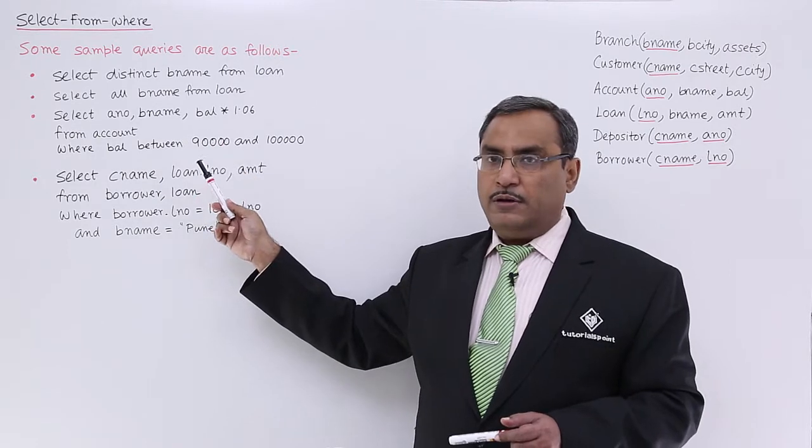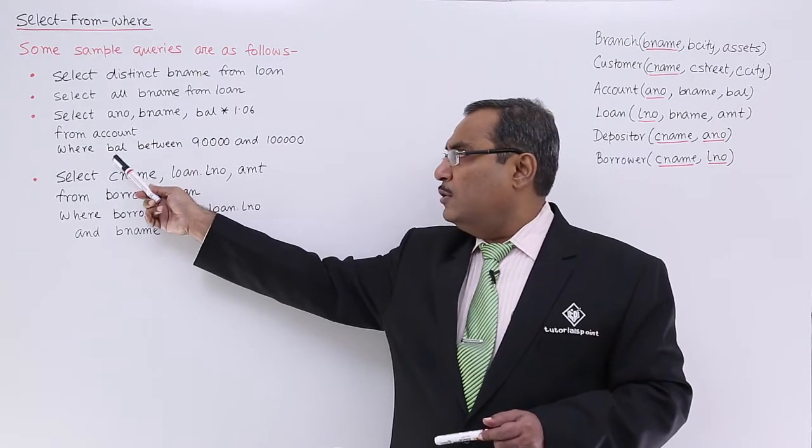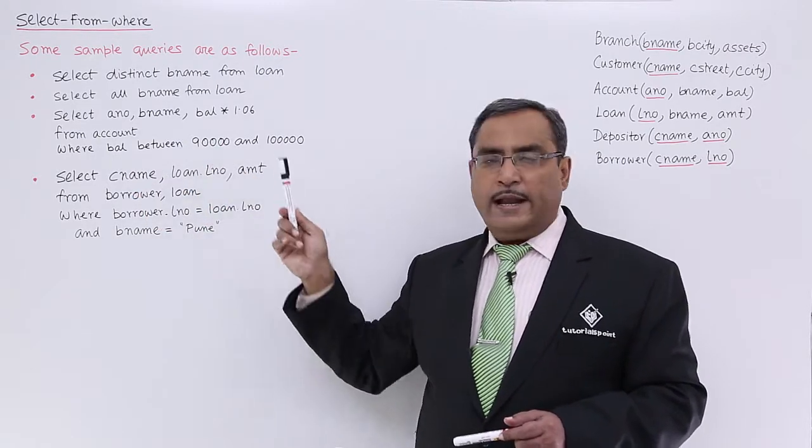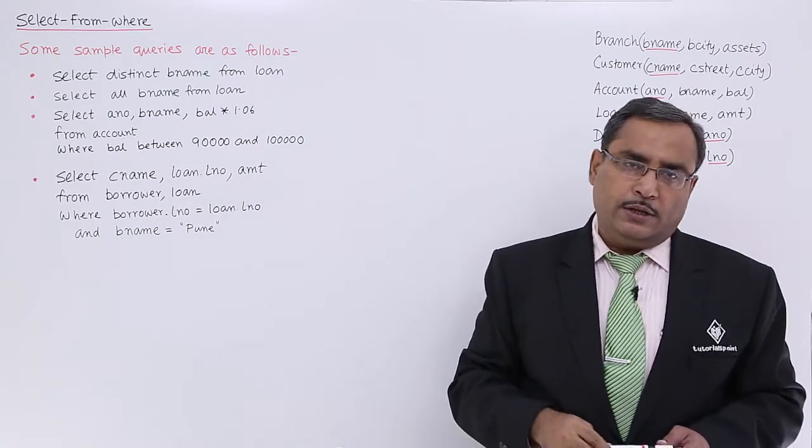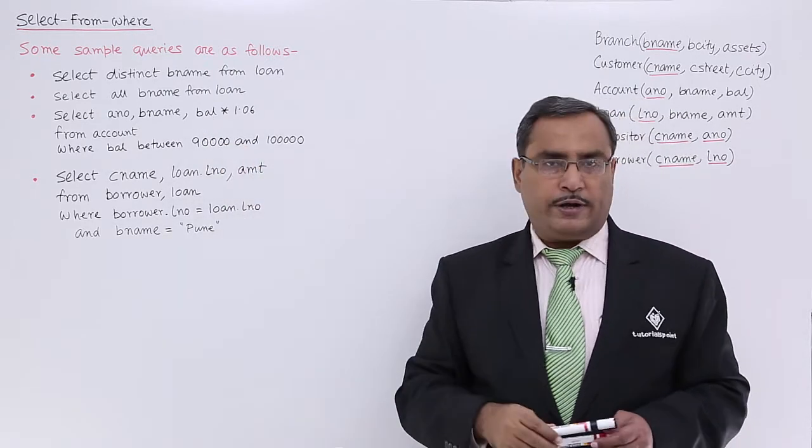from the account relation for those accounts having balance between 90,000 to 1 lakh. In this way, the query has been written.